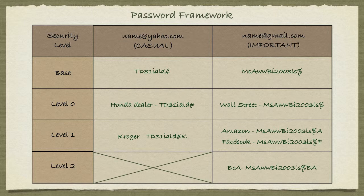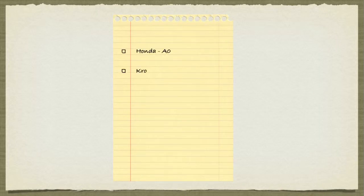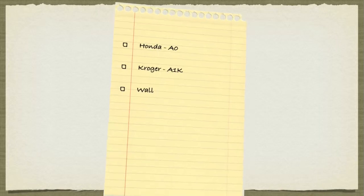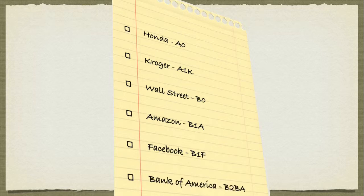That's a simple framework to remember multiple passwords. If you need to write them down, assign a letter and number to each cell — like A0, A1, A2, B0, B1, B2 — then simply write down the codes for each website. Be sure to keep your base password in a different place or in your mind. You can get more creative with other enhancements and options.